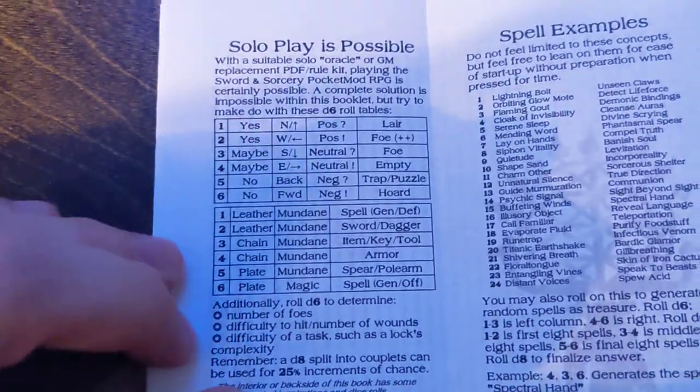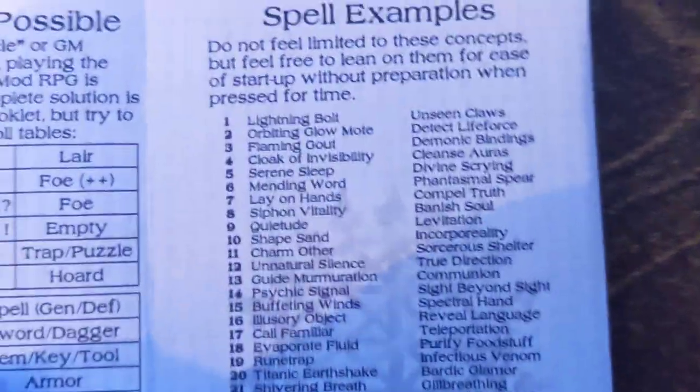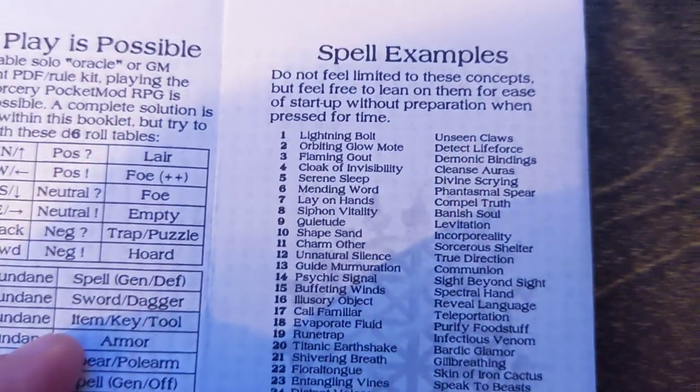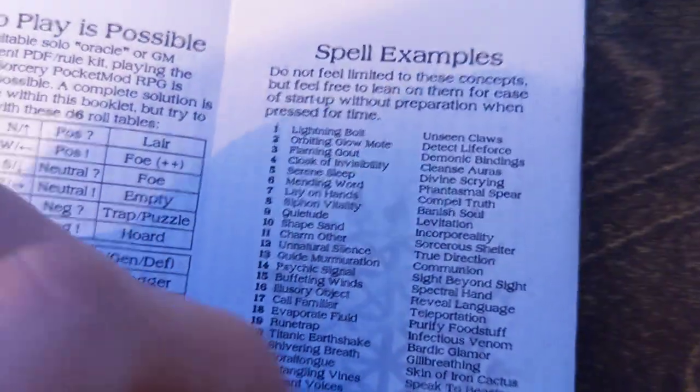Okay, what do we got next? We got solo play, rules for playing without other people, that's rad as fuck. Bunch of spell examples and teeny tiny text my blind ass can't read. Okay, so we got spell examples, and then what do we got?